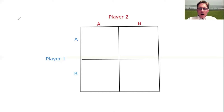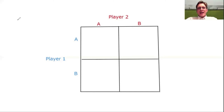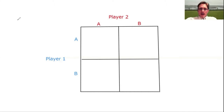Now let's move on and talk about payoff matrices. Here we have a simple payoff matrix with two players, and each of these players has two options, A and B.